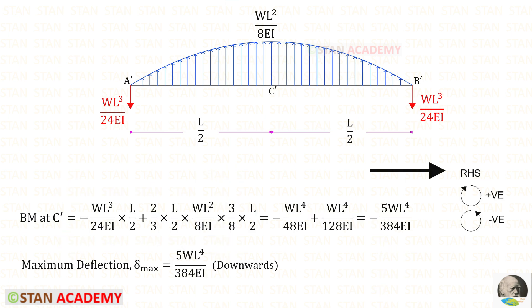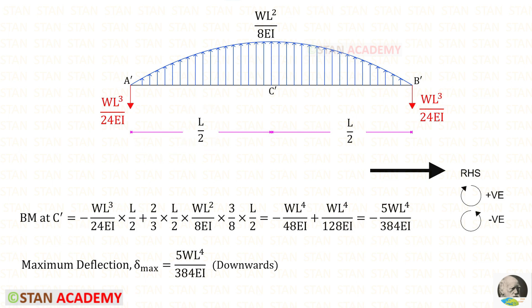This is the slope at A and this is the slope at B in the real beam. The maximum moment will be at the center. Using the right-hand side rule, let us find the moment at center C'. R_A' is acting in the anti-clockwise direction so it will be negative, and the distance is l upon 2. The distributed load is acting in the clockwise direction so it will be positive.